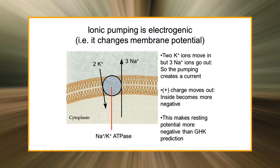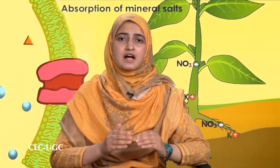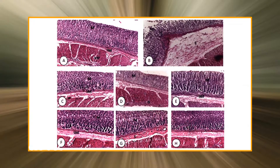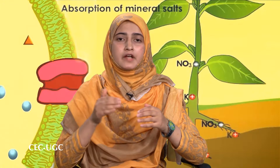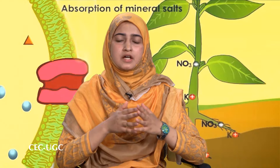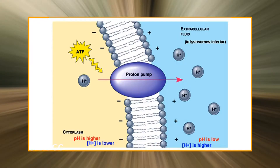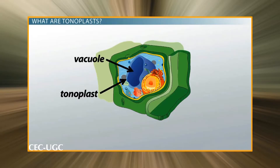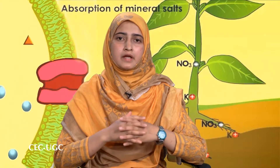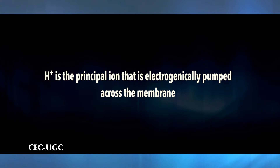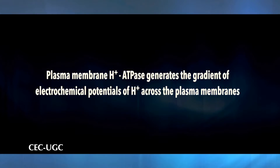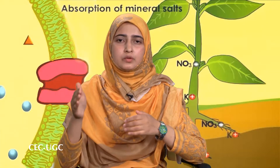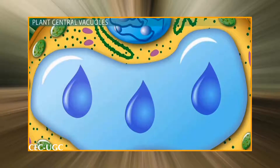The Na+/K+ ATPase is therefore an electrogenic ion pump. In contrast, the H+/K+ ATPase of animal gastric mucosa pumps 1 H+ out for every 1 K+ in, so there is no net movement of charge — making it an electro-neutral pump. In the plasma membrane of plants, fungi, and bacteria, as well as in plant tonoplasts and other endomembranes, H+ is the principal ion electrogenically pumped across the membrane. The plasma membrane H+ ATPase generates the gradient of electrochemical potentials of H+ across plasma membranes, while the vacuolar H+ ATPase and H+ pyrophosphatase pump protons into the vacuole lumen and Golgi cisternae.